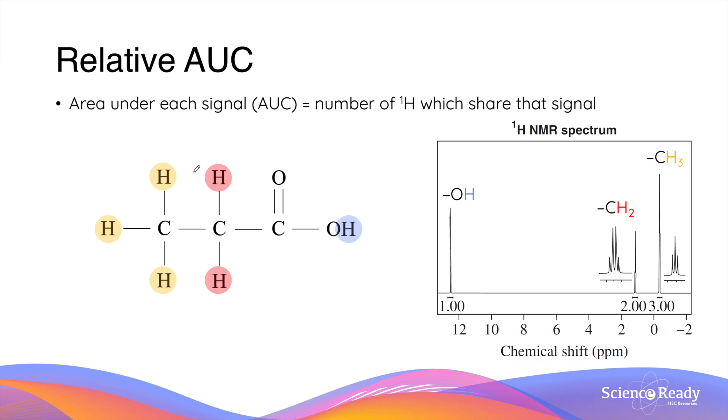The second piece of information provided by proton NMR spectrum is the relative area under each signal. This information tells us the number of protons which share that particular signal or chemical environment.